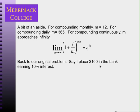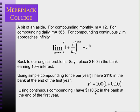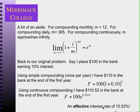Going back to our original problem: place a hundred dollars in the bank earning 10% per year using simple compound interest compounded once per year, and you have $110 at the end of the first year. Using continuous compounding, you have $110.52 at the end of the first year. So the compound interest formula changes from (1+i)^n to e^(i×n), and the effective interest rate is 10.52% rather than 10% — a little bonus from compounding continuously.